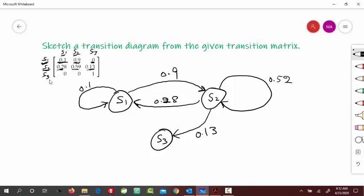And then from S3, S3 to S1 is 0, so there is no arrow going to S1, none to S2. Only S3 to S3 is 1. So arrow starting from S3 and coming back here, that's 1. So that is your transition diagram.